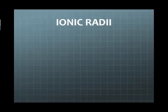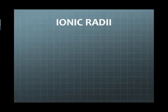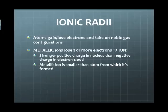We've discussed atomic radius, so we should take a look at ionic radius. When an atom loses or gains an electron, it becomes charged and we call it an ion. When a metal becomes charged, it typically loses an electron and takes on a positive charge. It then has fewer electrons than its respective atom, the nucleus is relatively stronger, and it pulls the electrons in — giving you a smaller ion. Metallic ions tend to be smaller than the atom from which they're derived.